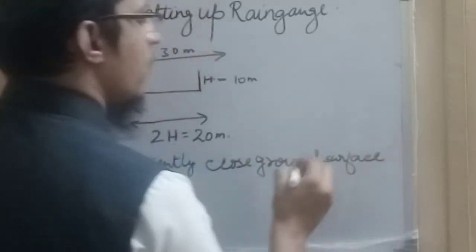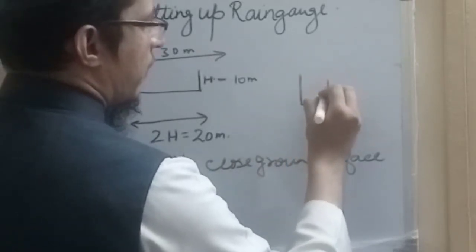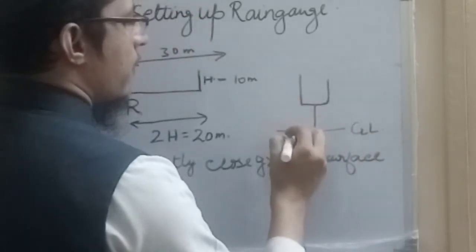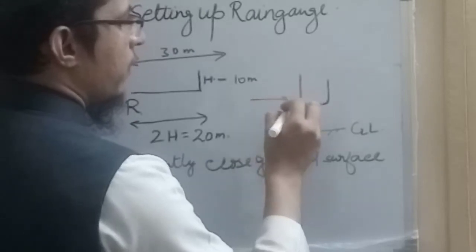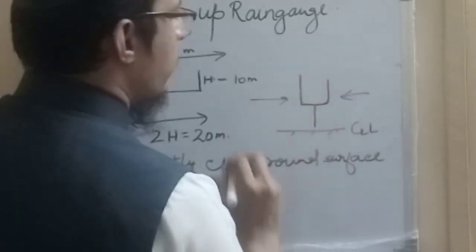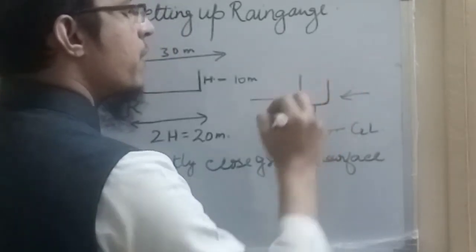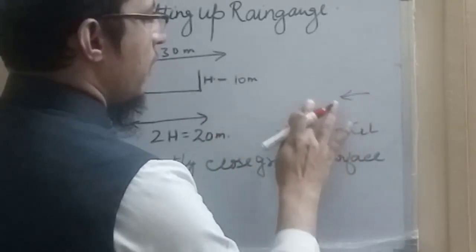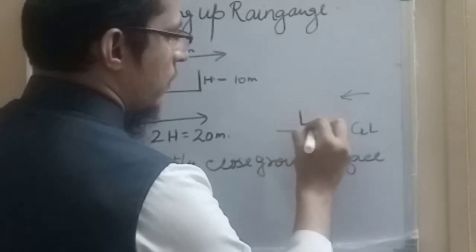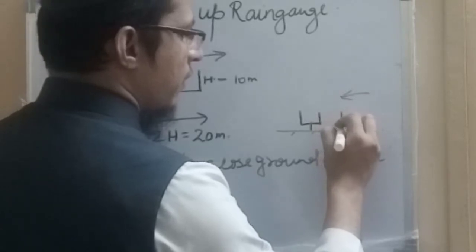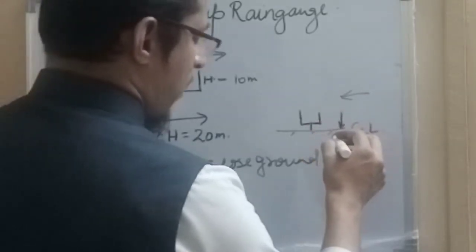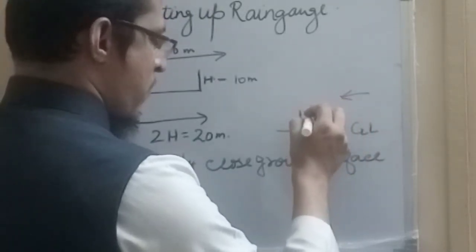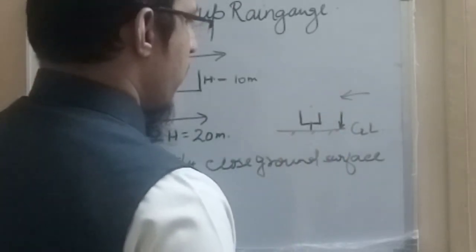That is, if this is the rain gauge and we have placed it too much above the ground level, then what will happen? Due to the wind, due to the turbulence, wind may create turbulence in it and we may not get a proper reading of the rainfall. Similarly, if the rain gauge is too close to the ground, then there might be chances that when rainfall intensity is heavy, it will strike the surface and will splash, and some drops may go into the rain gauge.